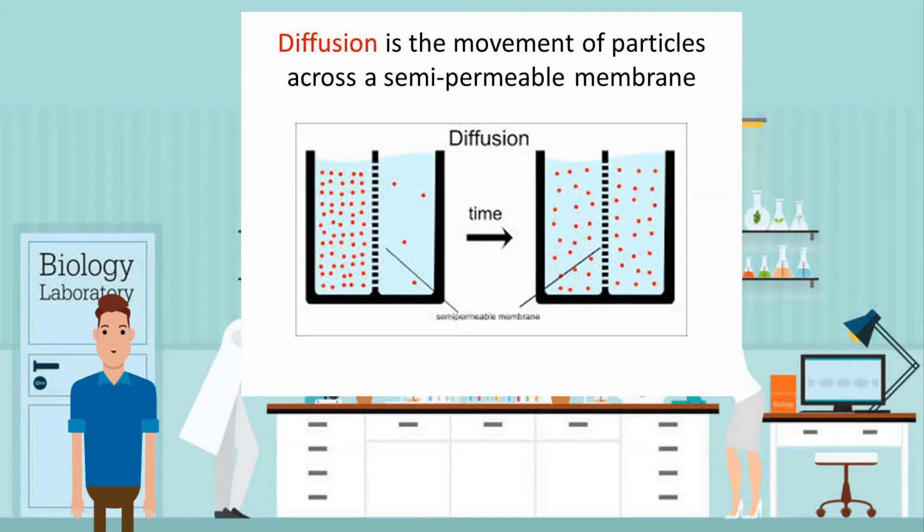A partially permeable membrane allows small molecules like water to pass through, but not large dissolved solutes.